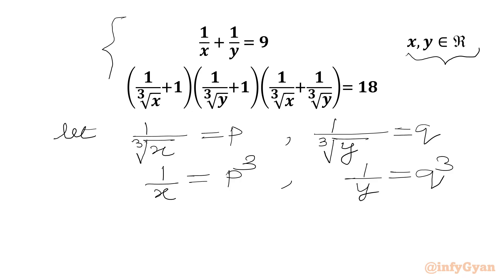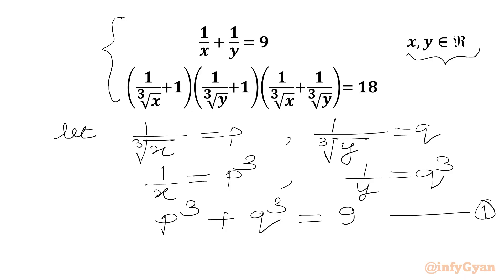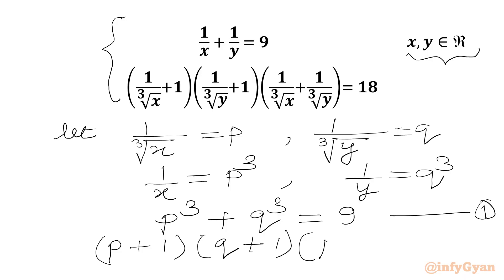Now we will write our given equations in terms of p and q. So 1 over x plus 1 over y is 9 — we write p cube plus q cube equal to 9. This is equation number 1. And our second equation: 1 over cube root x plus 1 times 1 over cube root y, which gives us p plus q equal to 18. This is our second equation.